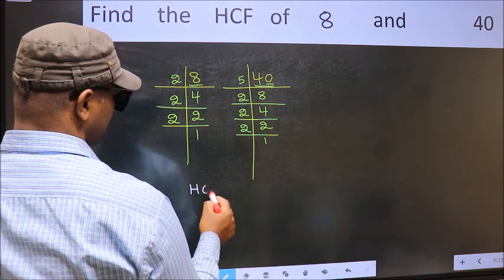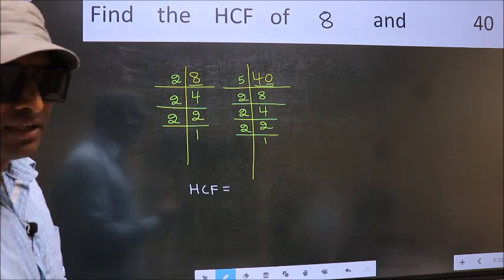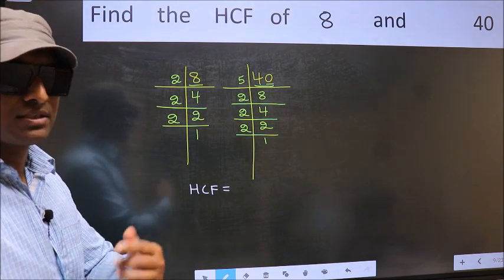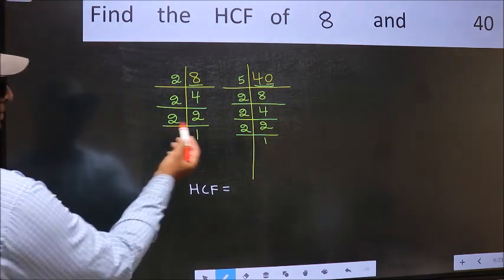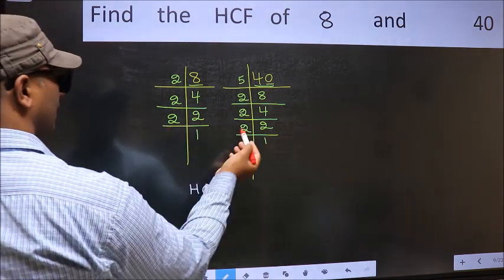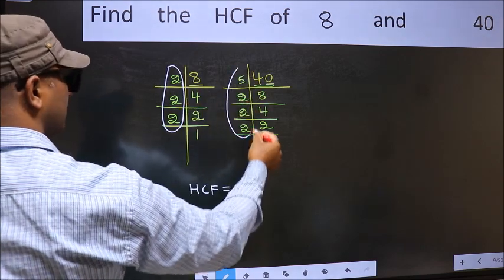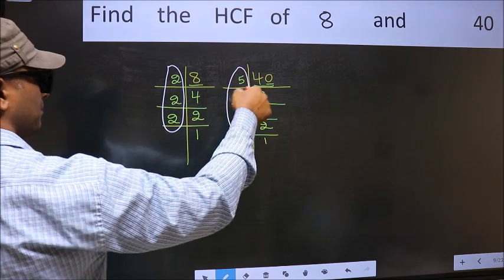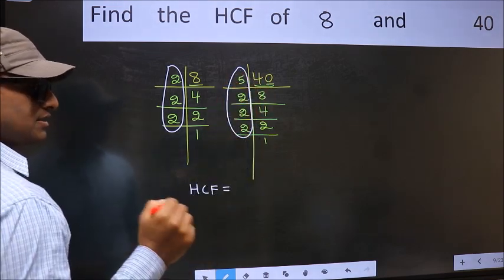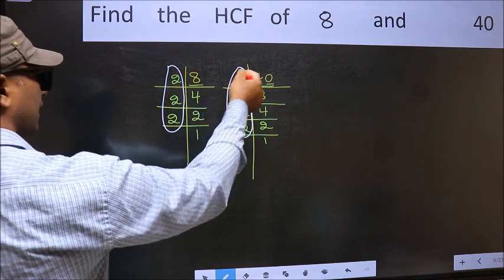Therefore our HCF is, HCF is the product of the numbers which should be present in these two places. That is here and also here. Here and here. So now let us find the numbers which should be present here and here.